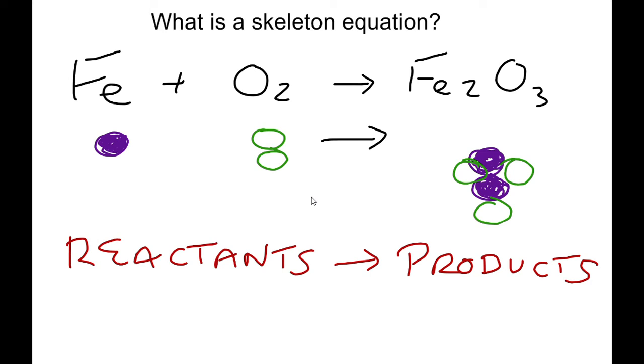Furthermore, it shows two circles of oxygen and three circles of oxygen on each side of the equation. Two circles as reactants and three circles as products. It is therefore very clear that one circle of purple iron with two circles of green oxygen could not possibly form what we see on the product side, two circles of purple with three circles of green.